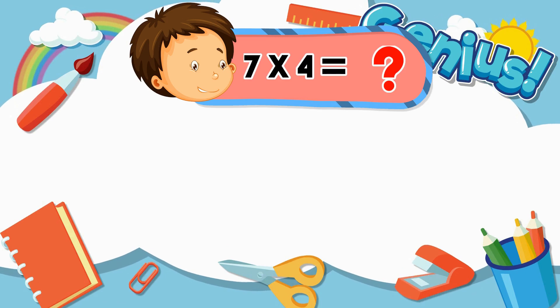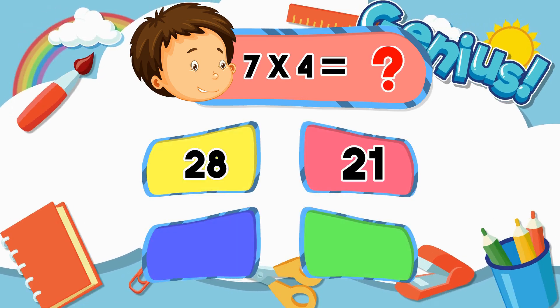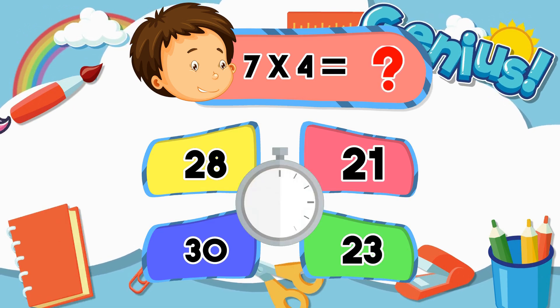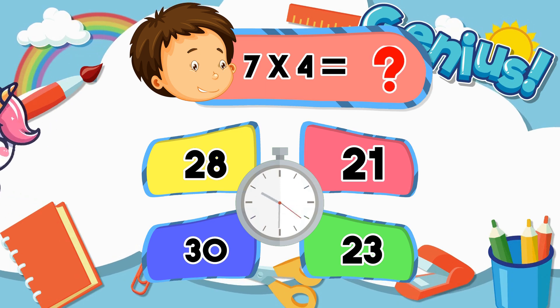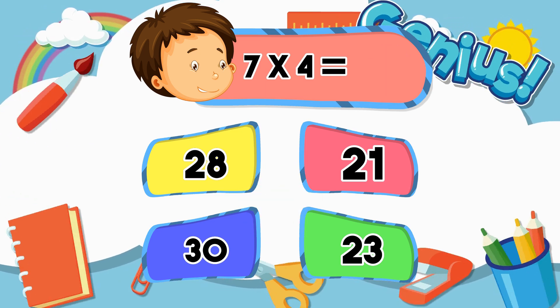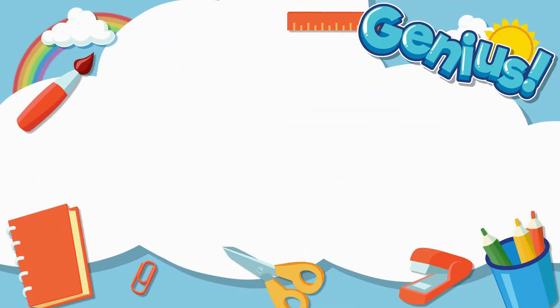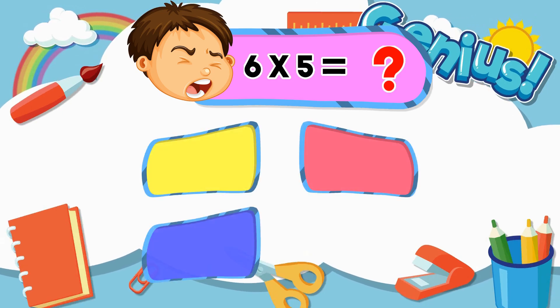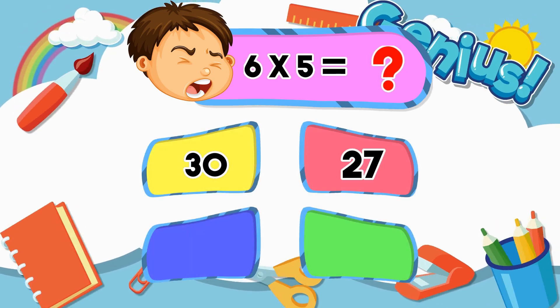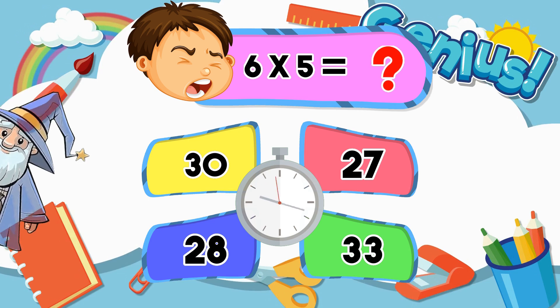What is 7 times 4? 28, 21, 30, 23, 22. 28. 22. 23.